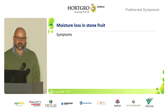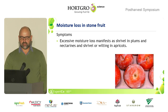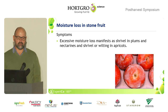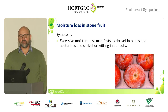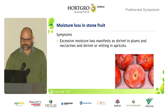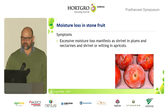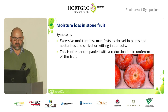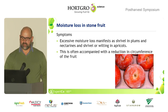Now I'm going to talk about moisture loss and some principles of that. The symptoms of shrivel are excessive moisture loss that manifests as shrivel in plums and nectarines, and shrivel or wilting in apricots. It's often accompanied by a reduction in circumference of the fruit and also fruit weight loss.